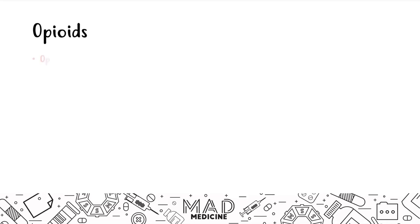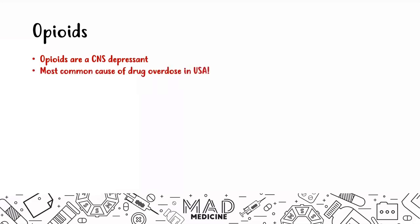Let's talk about opioids. Opioids are a CNS depressant — this is the last CNS depressant we're going to be talking about. We talked about alcohol, benzos, and barbiturates already. Opioids are the most common cause of drug overdose in the United States, and opioid addiction is very high and very common right now.